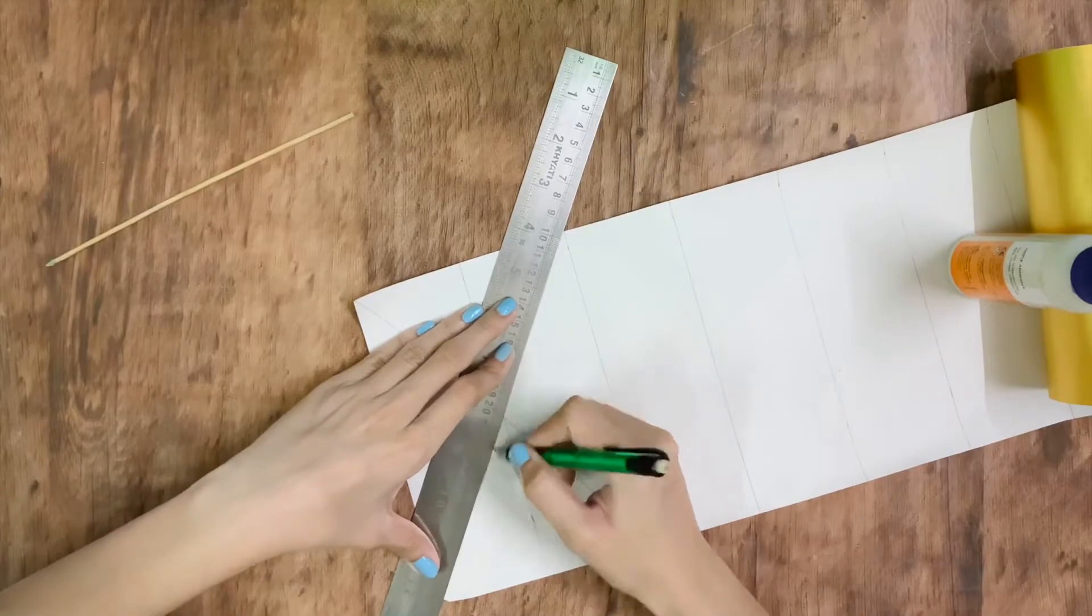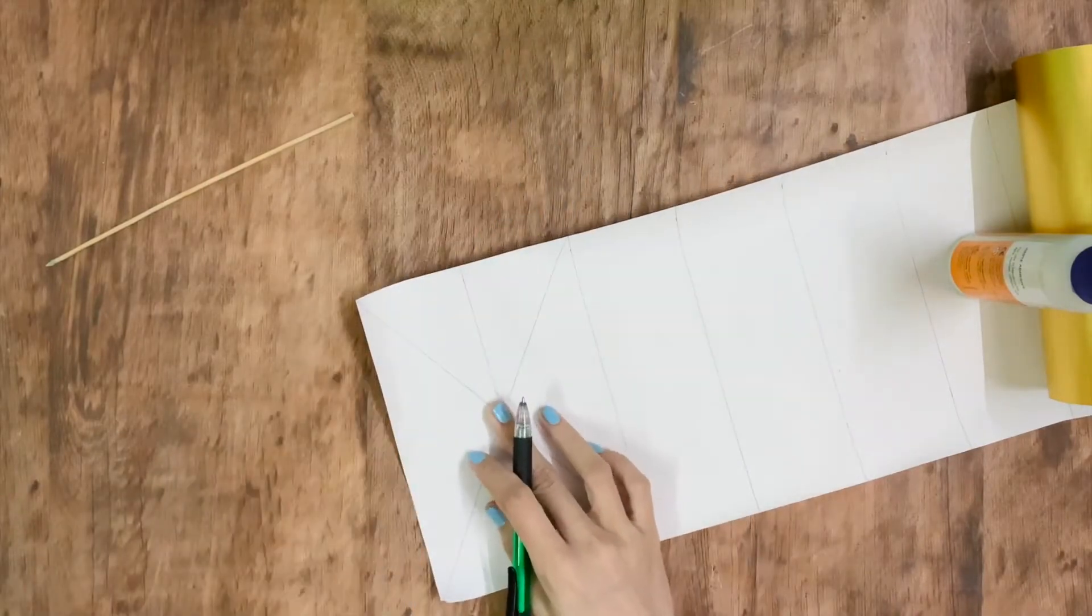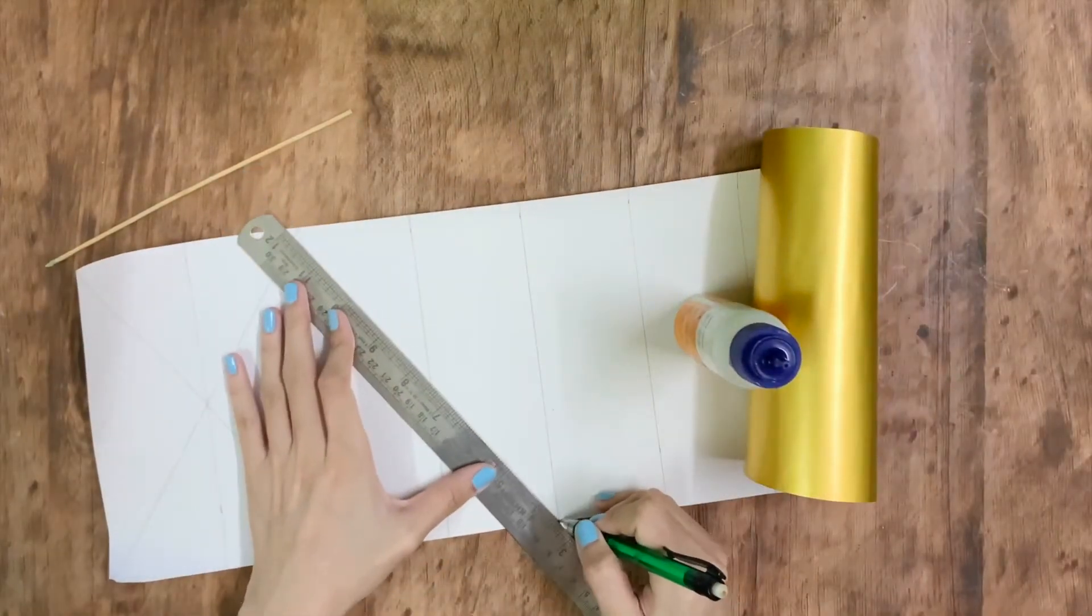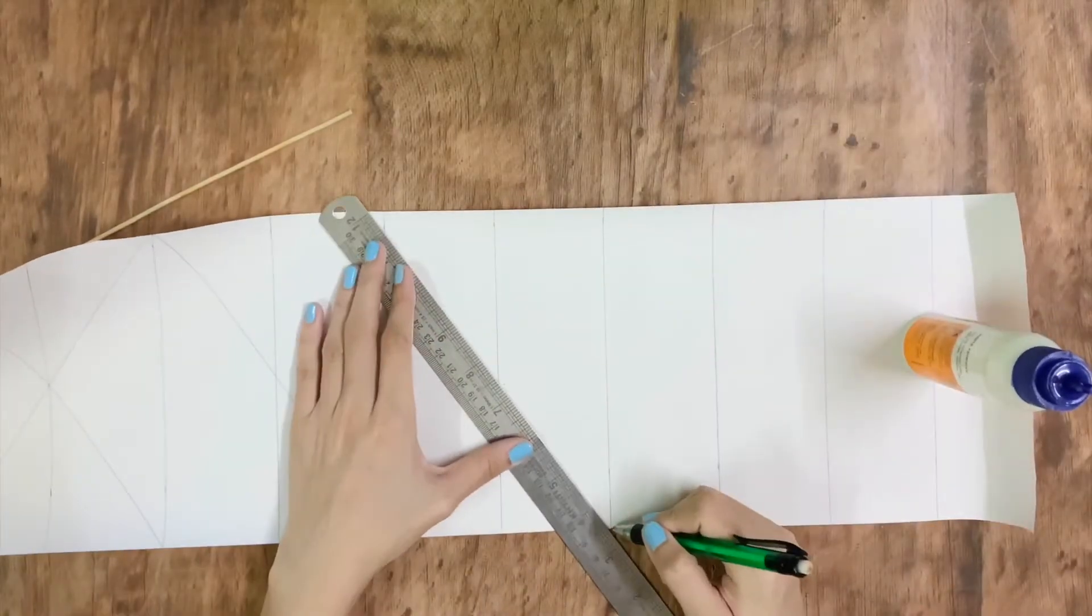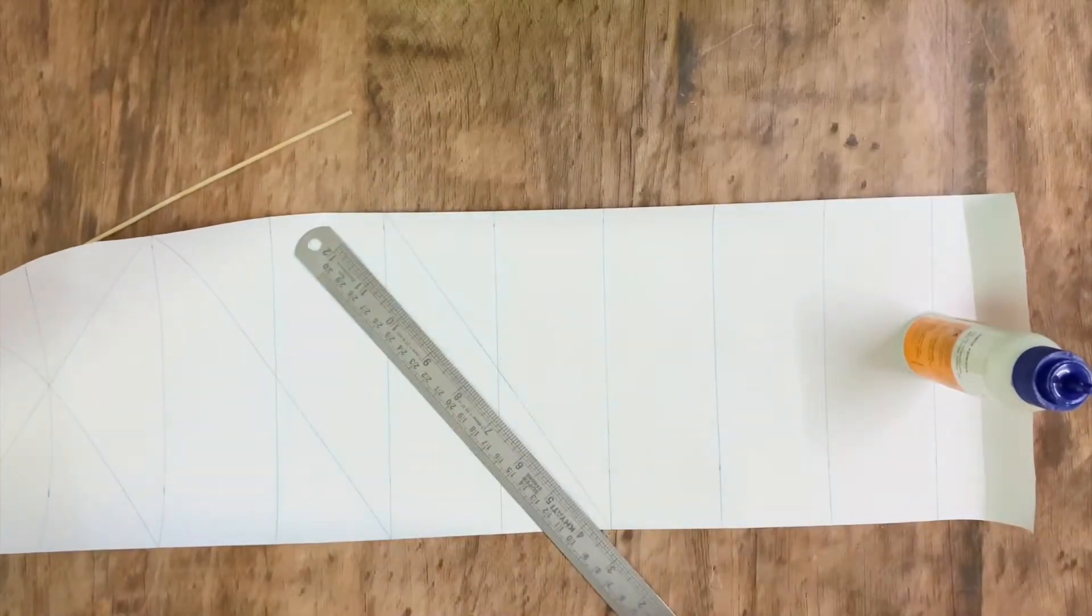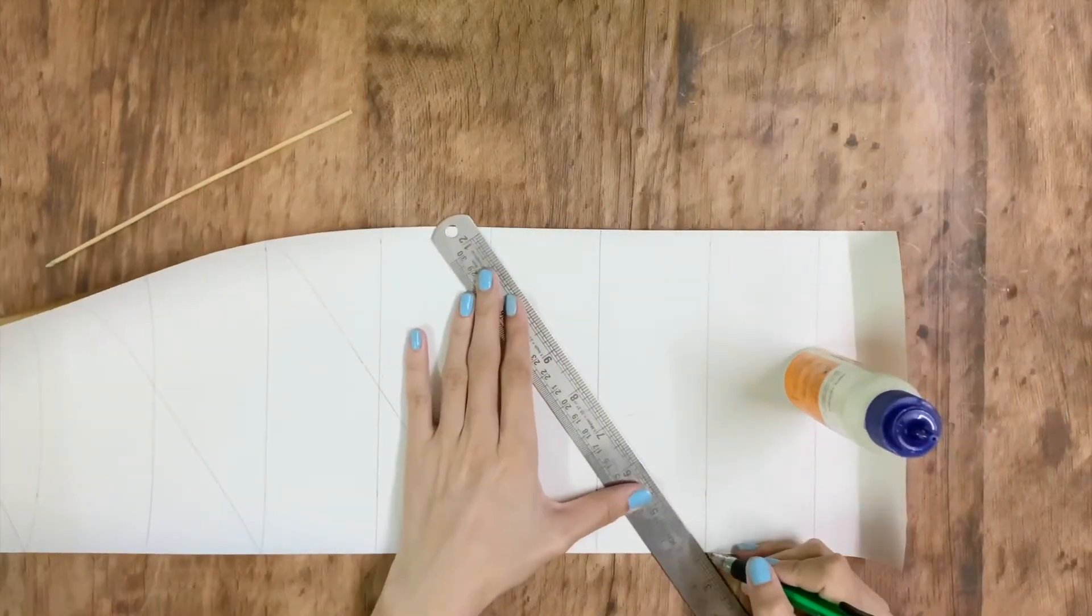Now you will have an X. Repeat this same procedure on all the parts you have made, leaving the even number lines.